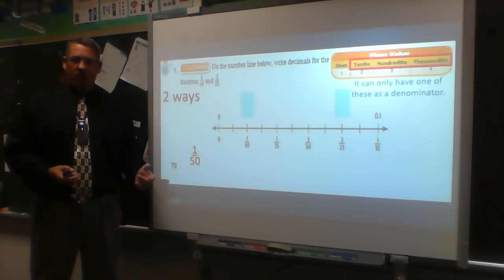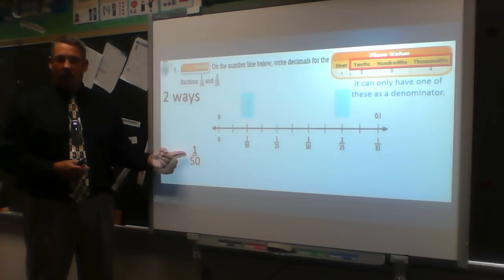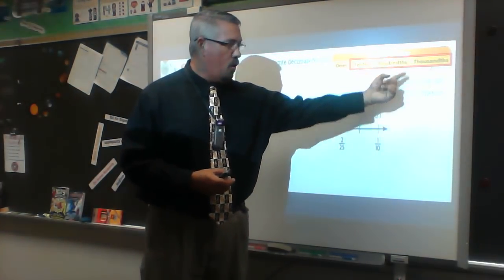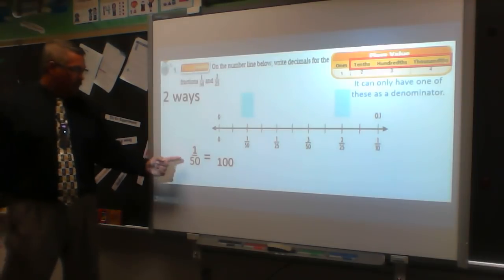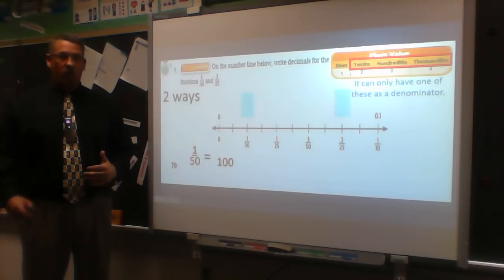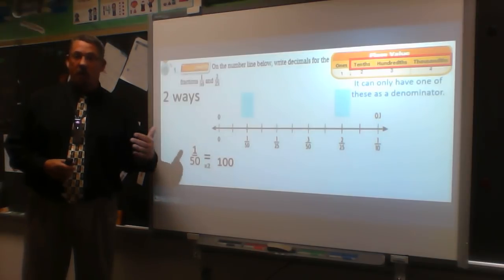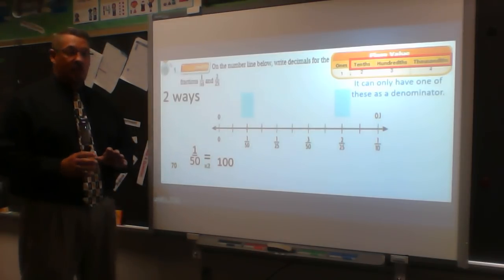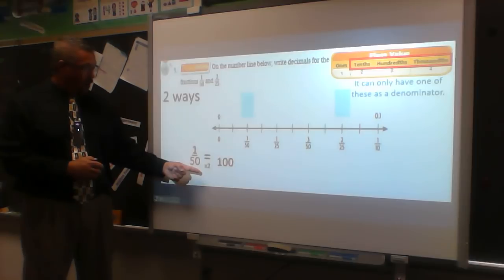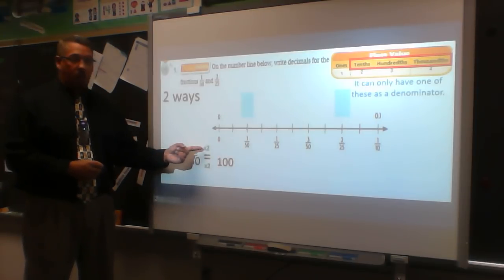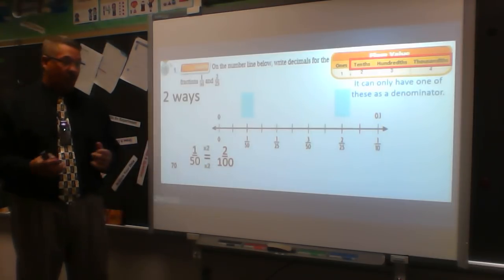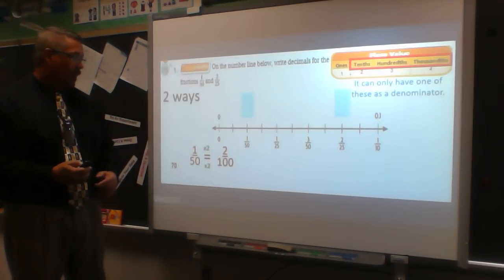For one fiftieth: there's no fiftieth position in the decimal chart, so I need to convert. My options are denominators of 10, 100, or 1000 — I'll use 100. What do I multiply 50 by to get 100? Two. Whatever happens on the bottom must happen on the top, so I multiply 1 by 2, giving 2 over 100 — two hundredths. So one fiftieth equals two hundredths.